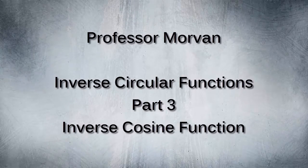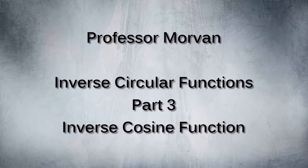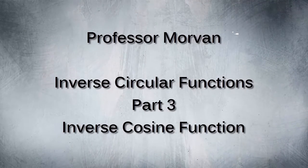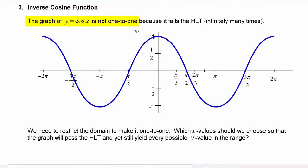In part three of our lesson on the inverse circular functions, you will learn about the inverse cosine function. Let's start off with the graph of y equals cosine of x. And just like we discovered with the graph of sine of x, cosine is not one-to-one because it fails the horizontal line test.